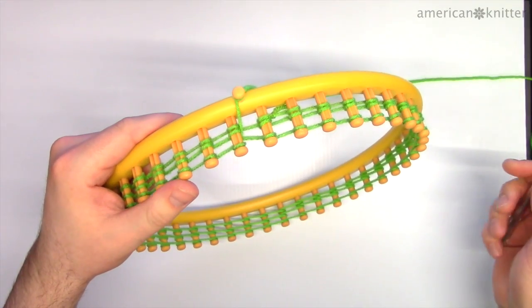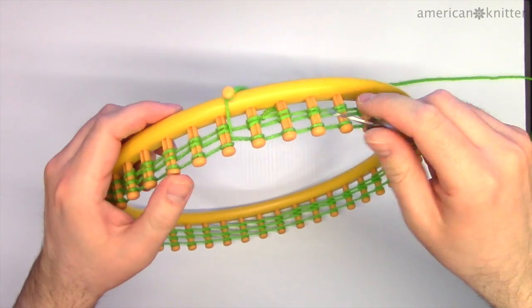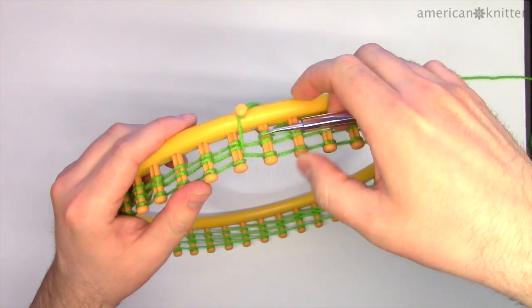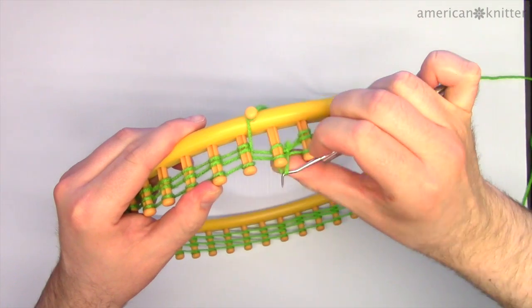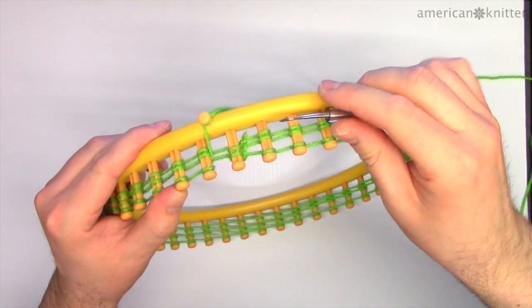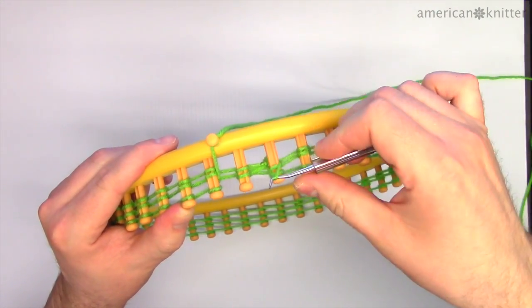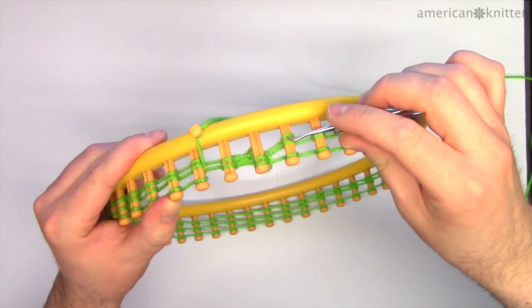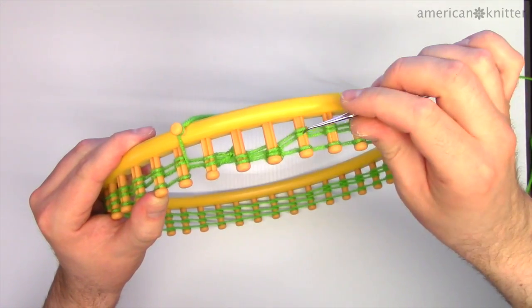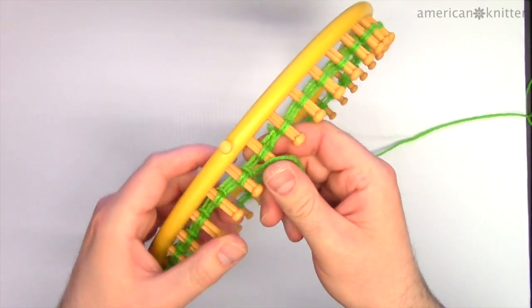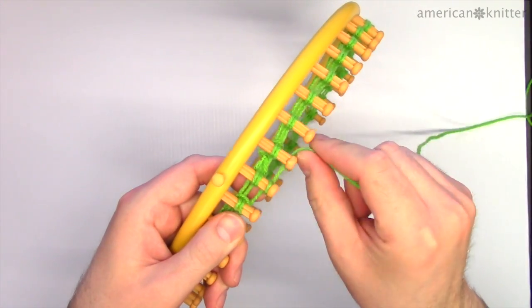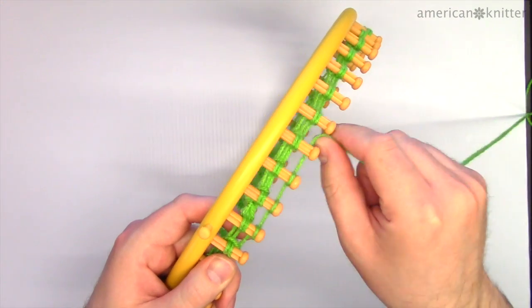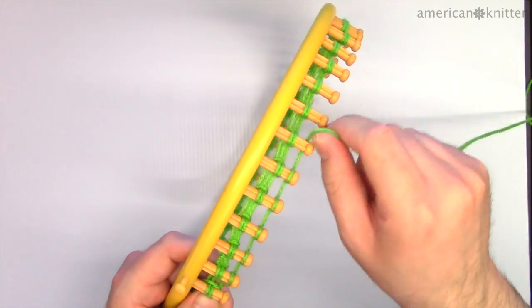Now it's time to use the pick tool. Pull the bottom loop of yarn up, over, and off each peg, so that only two rows of yarn remain on each peg. Every time you have three rows of yarn on the loom, you'll pick off the bottom row and then add another row, wrapping and picking. Continue wrapping and picking until you've added 14 rows of yarn.